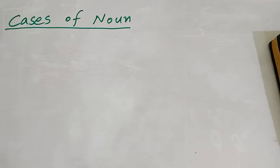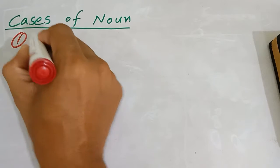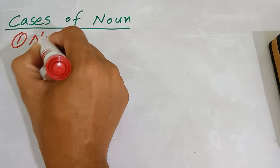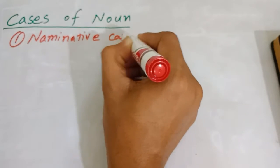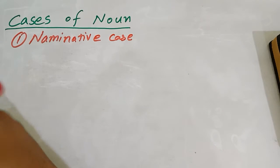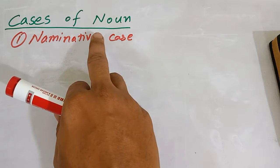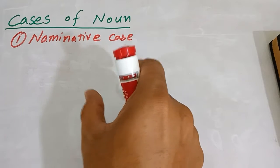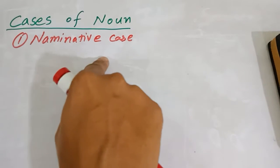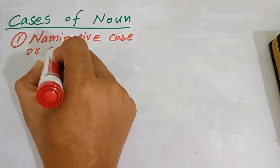There are four cases which I will discuss. The first is the nominative case. What is the nominative case? It is the case of noun when it functions as the subject of a verb. When a noun acts as a subject, it is called the nominative noun. It is also called the subjective case.